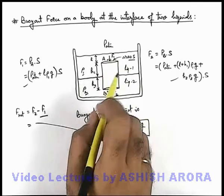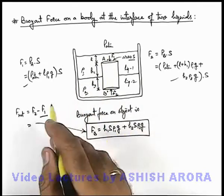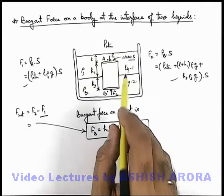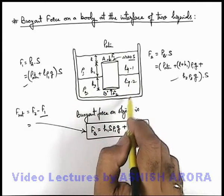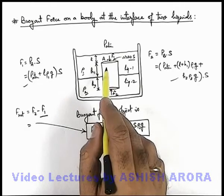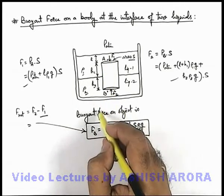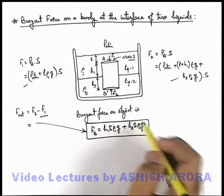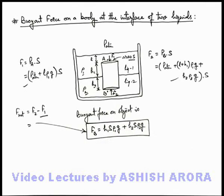So just be careful how we have calculated here. Liquid 1 is pushing the object in downward direction, liquid 2 is pushing the object in upward direction, and the difference of the two is net buoyant force, which can even be calculated directly by Archimedes' principle, that is the weight of liquid displaced by all the objects.